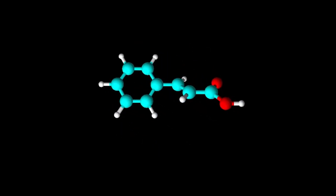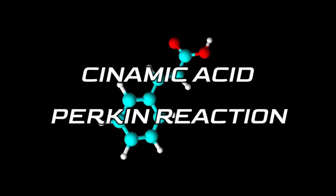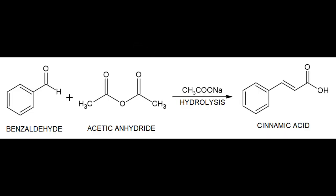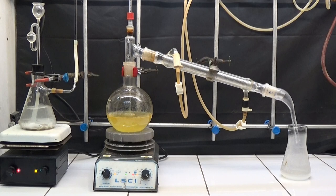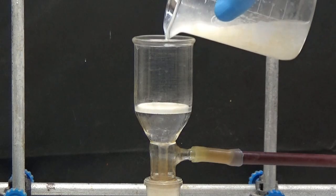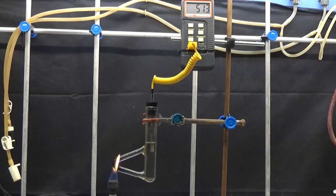In this video we will see how to get cinnamic acid by Perkin reaction. This synthesis involves laboratory operations of reflux, steam distillation, filtration, crystallization, and melting point.